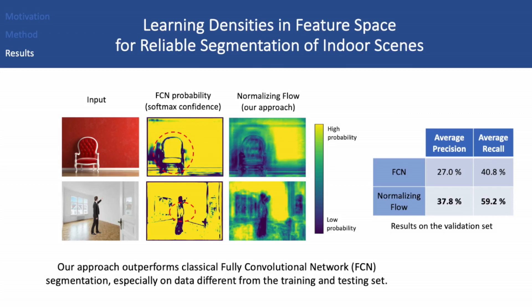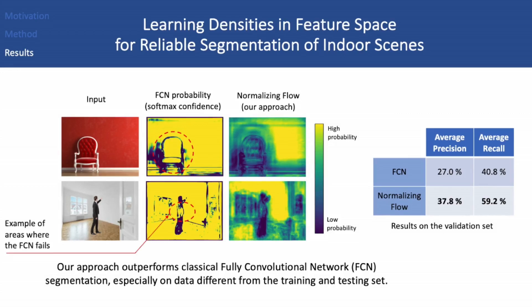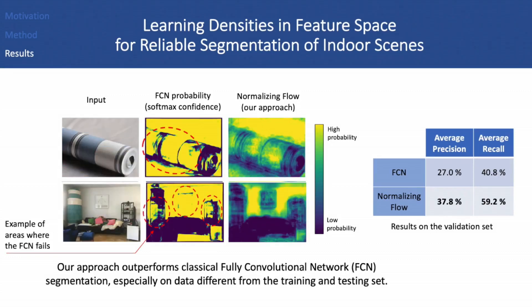Our approach outperforms classical FCN segmentation, especially on data different from the training and testing set. In the first image, the chair is completely missed by the FCN probability. In the second image, half of the human is also missed. On the other hand, our method has no problem with those two images. Similarly, a large portion of the foreground is missed by the FCN, which isn't the case with our approach.